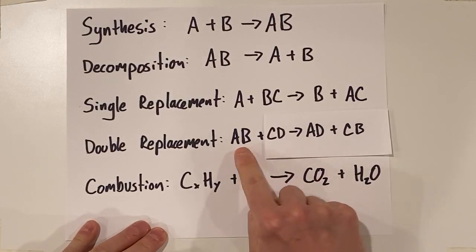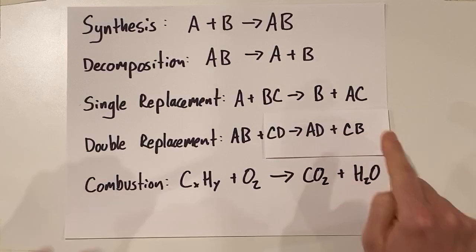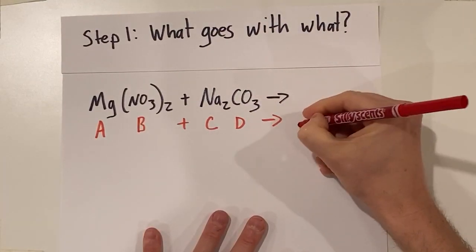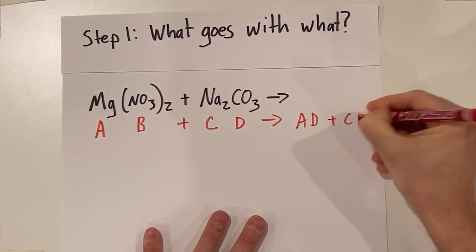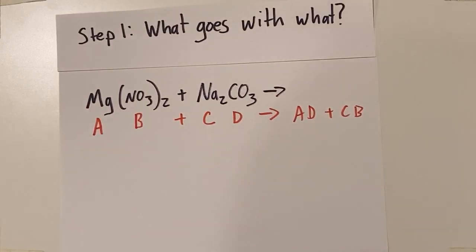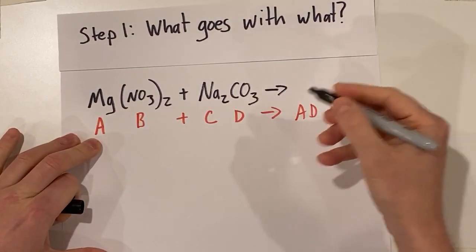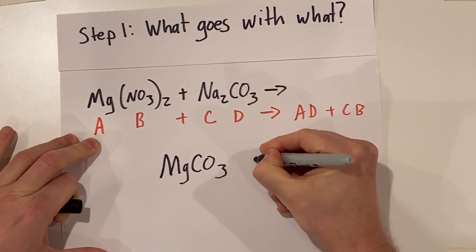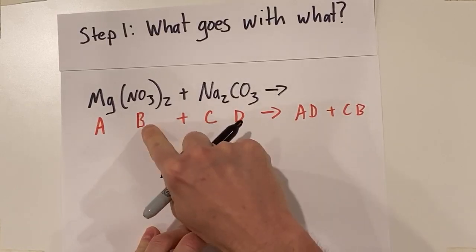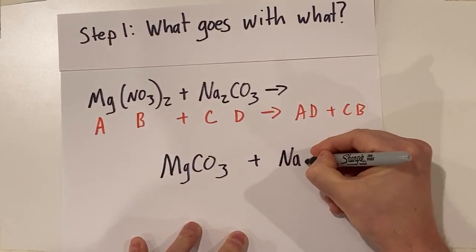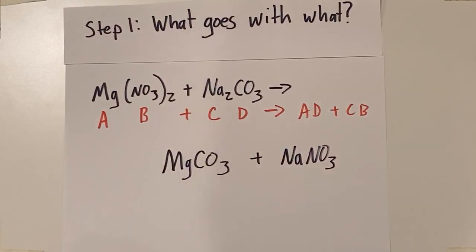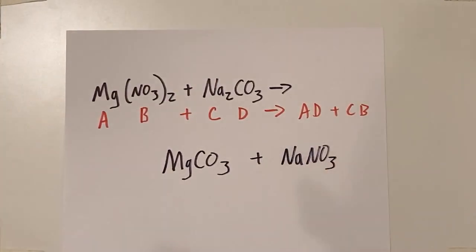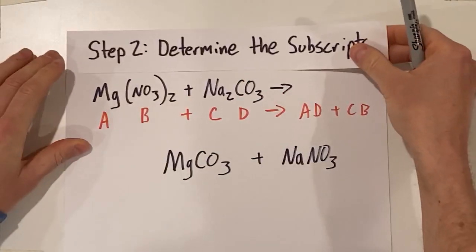Remember, in a double replacement reaction, the ions switch places with one another. So we're going to get AD plus CB. That means magnesium is going to be with the carbonate, and the sodium is going to be with the nitrate. We've figured out what goes with what. The next step is going to be to determine the subscripts on these new products that we formed.